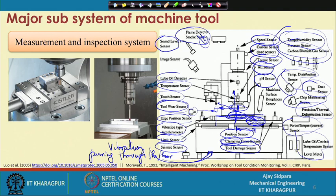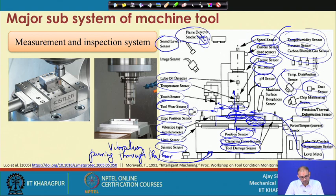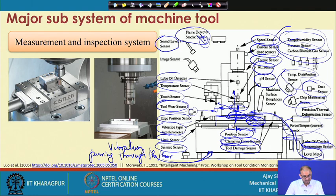Tool damage sensors allow continuous monitoring. Using three different sensors based on three different principles and all showing the same result gives confidence that the tool is reusable for the next operation. Lubrication and coolant temperature and level sensors are needed because coolant is recirculated and absorbs heat from the working zone — its temperature will rise over time. The coolant level must also be maintained, otherwise the pump cannot pass coolant to the working zone. As you can see, there are potentially tens or hundreds of sensor types that could be mounted, so the question is: how many sensors do you really need?